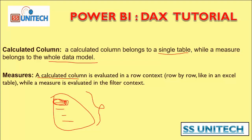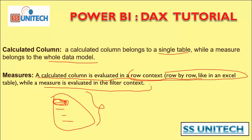A calculated column is evaluated on the row context — meaning row by row. This is very important to remember. The calculated column uses row context, and the measure is evaluated on the filter context. In this video we will see a little about row and filter context, but I will record a separate detailed video on that topic.